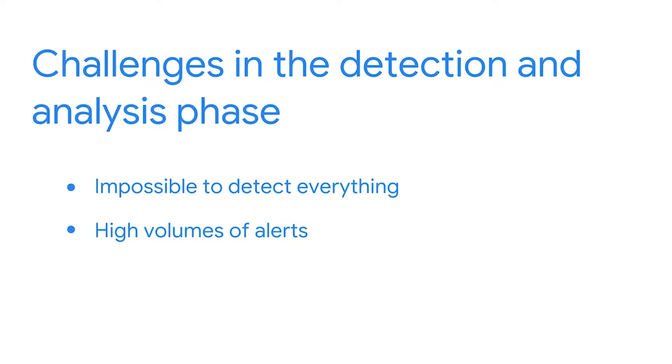Most of the time, high alert volumes are caused by misconfigured alert settings. For example, alert rules that are too broad and not tuned to an organization's environment create false positives. Other times, high alert volumes can be legitimate alerts caused by malicious actors taking advantage of a newly discovered vulnerability. As a security analyst, it's important that you're equipped to effectively analyze alerts.